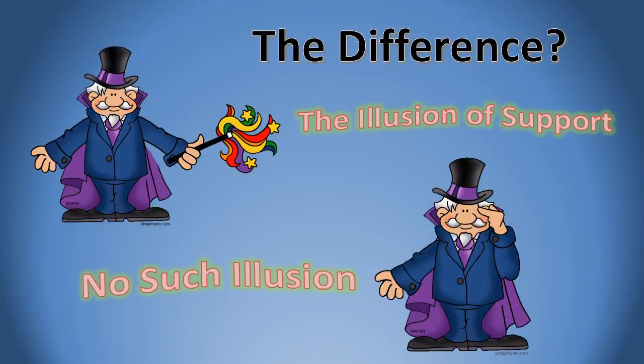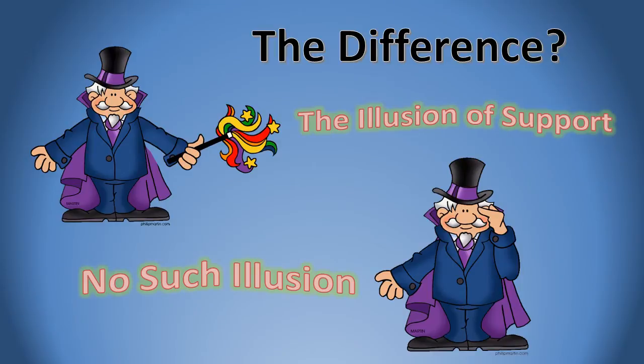Bear in mind, the difference is: in some cases, people are doing some fakery, giving the illusion of support. If there is no such illusion and you're just pointing out a logical fact that one claim is equivalent to another, you're not really committing a fallacy.